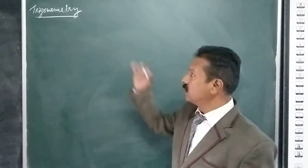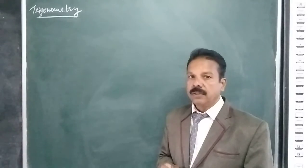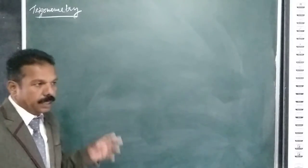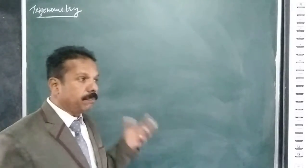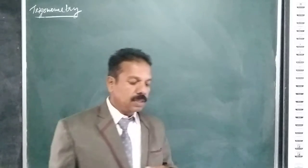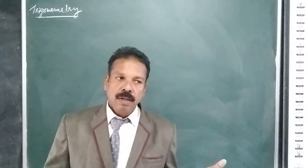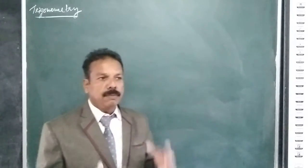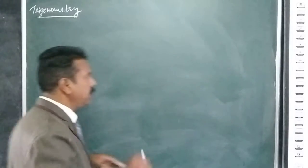Hello classroom students, today you are going to study an important topic — trigonometry. It is a very important branch in mathematics at the secondary level. Trigonometry is not very easy, but if we study it systematically it becomes easy. We are talking about the right-angled triangle and the ratio of its sides. We will learn about trigonometric ratios, trigonometric identities, and trigonometric ratios of specific angles.